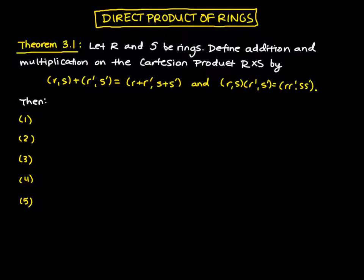So if we have a coordinate pair (r, s) plus (r', s'), then we just add component-wise. So we add R to R prime and S to S prime. Similarly, we multiply in each component, so we multiply R times R prime and S times S prime in the Cartesian product R cross S.